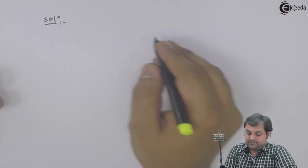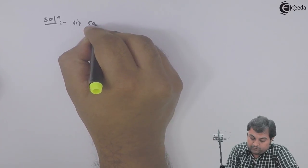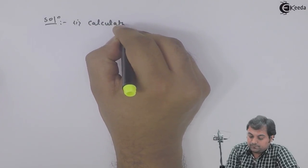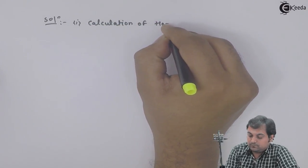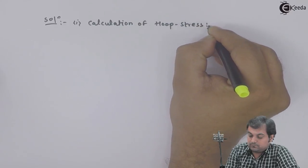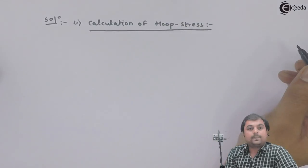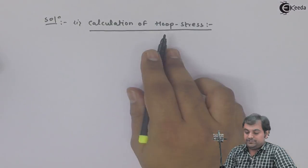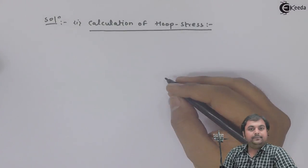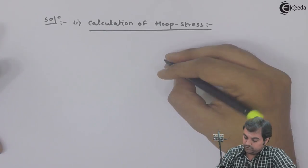The first one is calculation of hoop stress. For this hoop stress I will draw the diagram and explain how the hoop stress would be taking place.